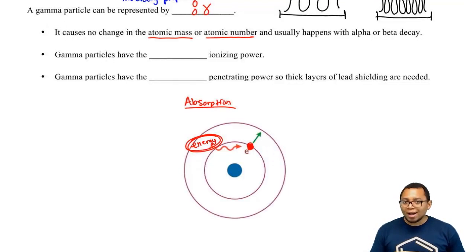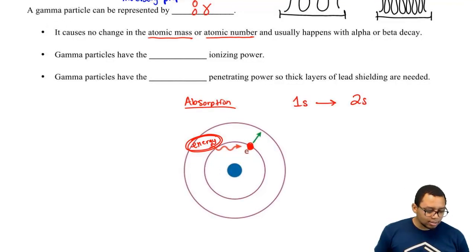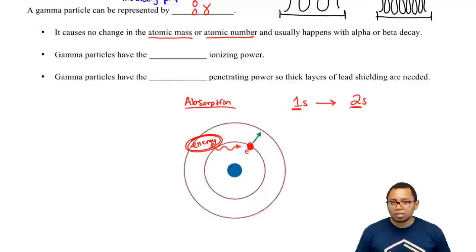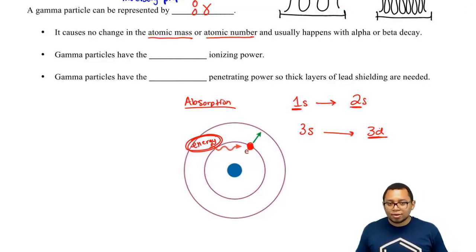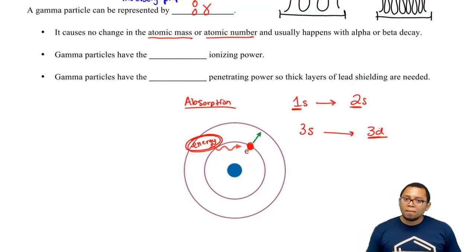Basically, if you go from 1s to 2s, you're going from the first shell to the second shell - that represents absorption. You could also go from 3s to 3d, skipping 3p altogether and jumping straight to 3d. Both of these examples represent absorption.